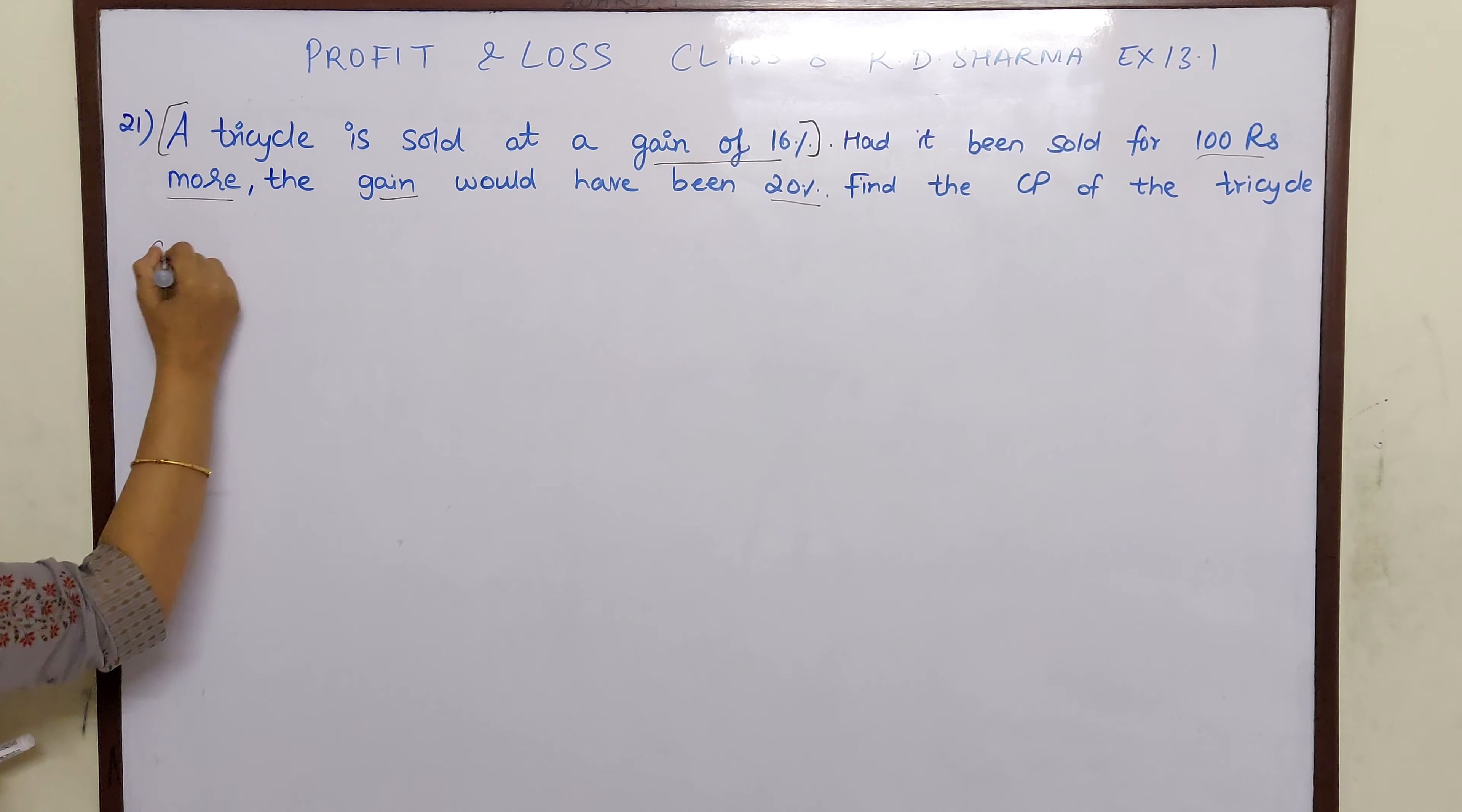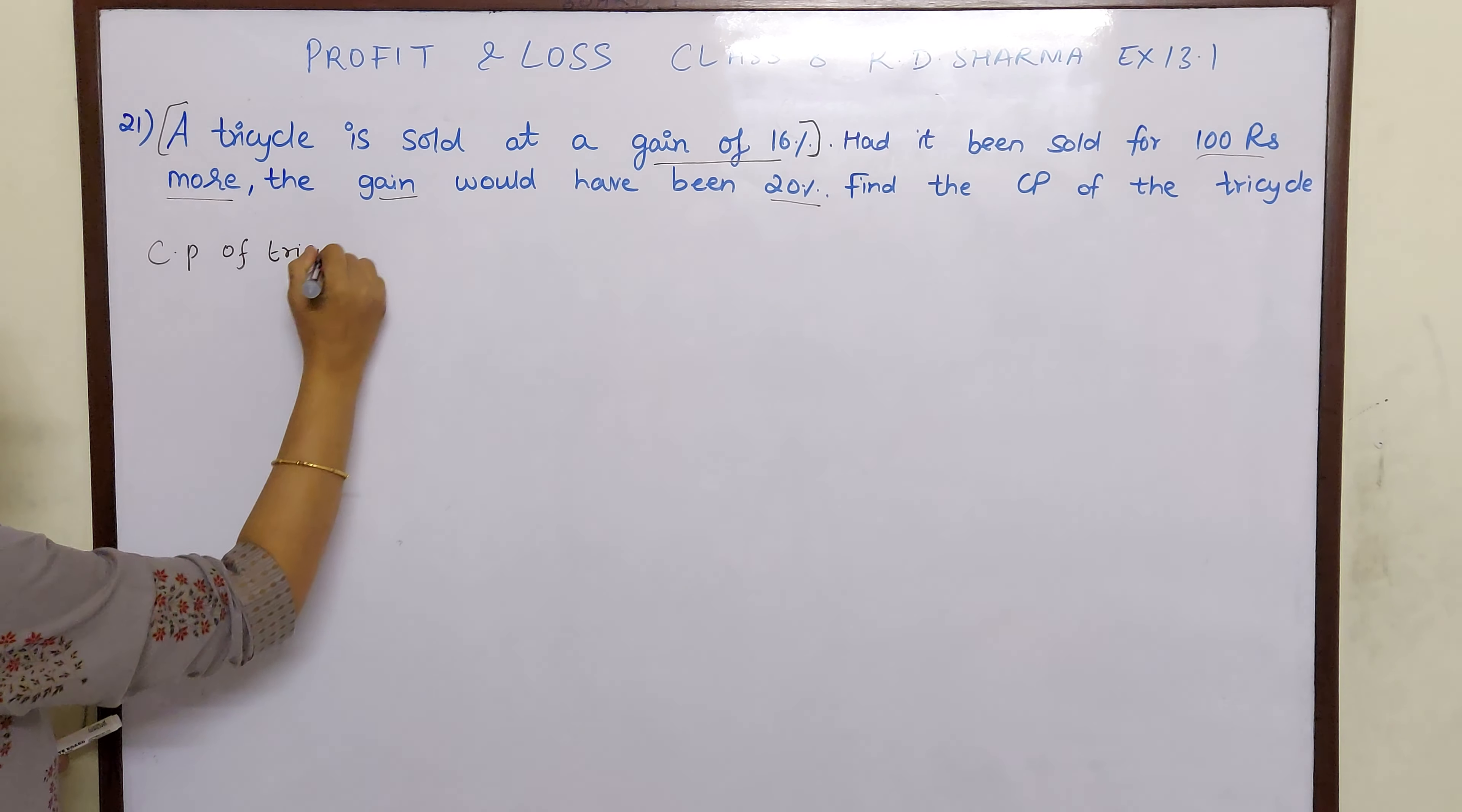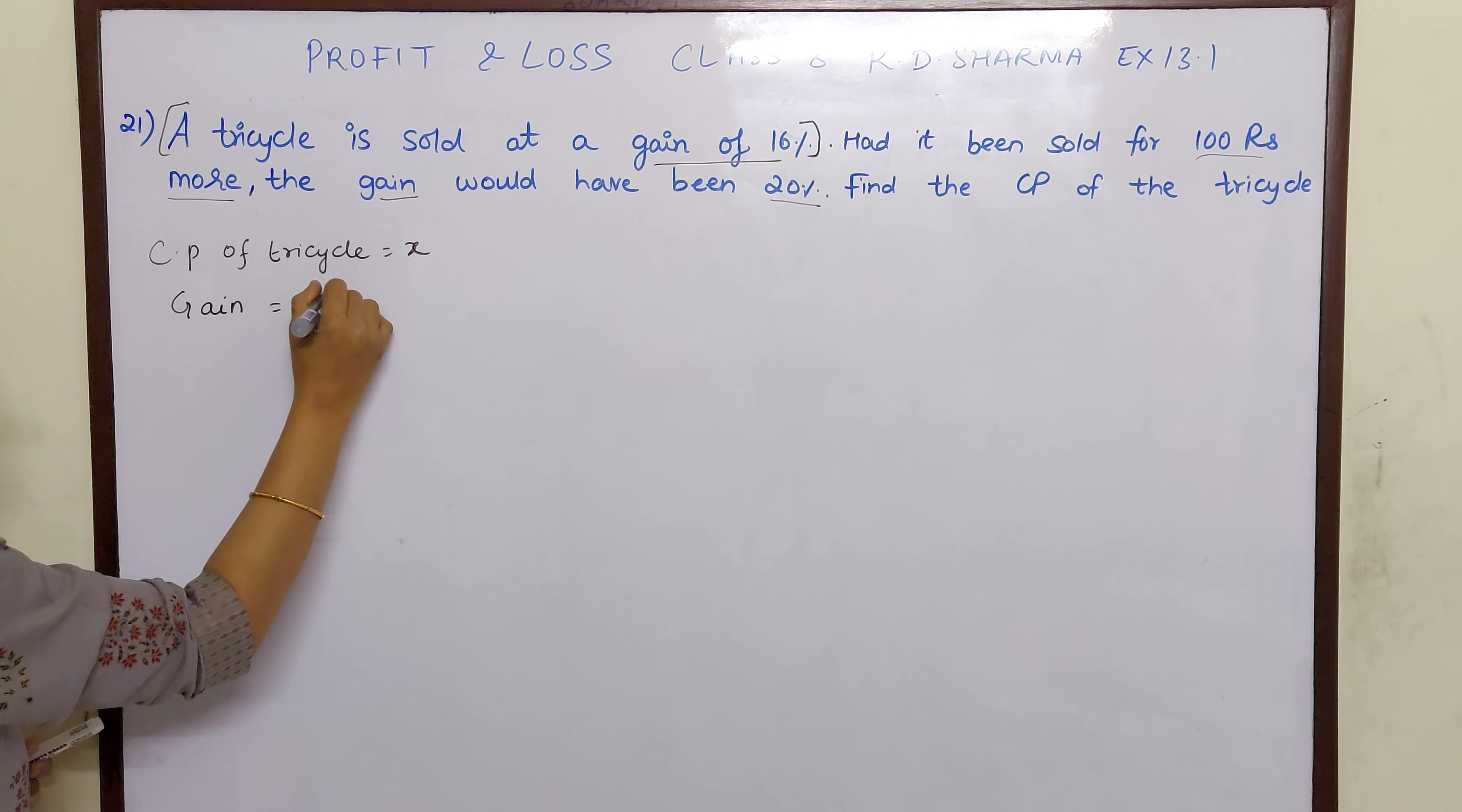So cost price of tricycle, let us assume to be X. And we have been given gain percent is equal to 16%.